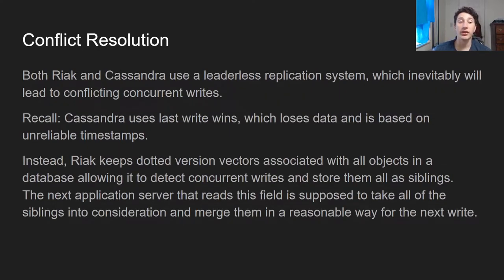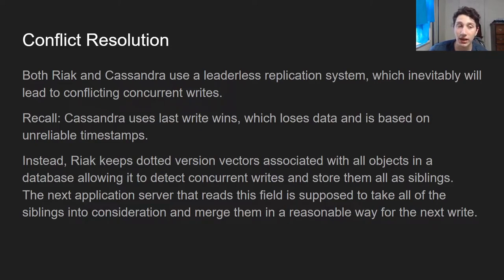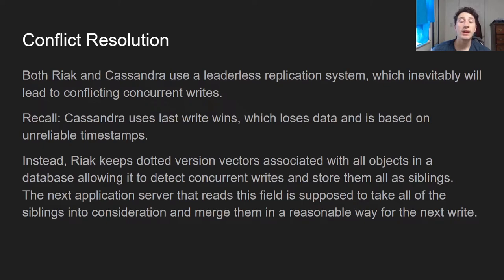What about conflict resolution? Both Riak and Cassandra use a Dynamo-style implementation, which means that all writes are not going to one leader node, but rather can go to any single node in the cluster handling that partition. So inevitably there will be race conditions and write conflicts. Cassandra deals with this using last-write-wins — each write, once it reaches the server, is assigned a timestamp, and the write with the higher timestamp is kept. There are two issues: timestamps are unreliable so servers may be out of sync and the wrong write may win, and the other write that came in a millisecond before is just lost with no record.